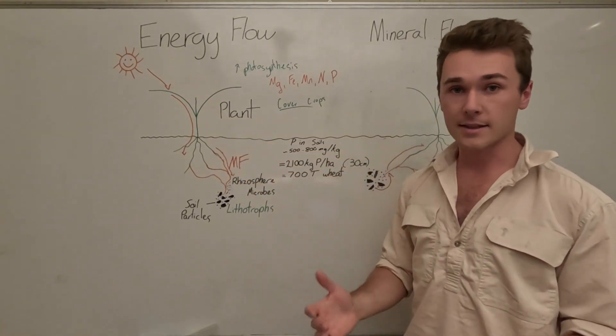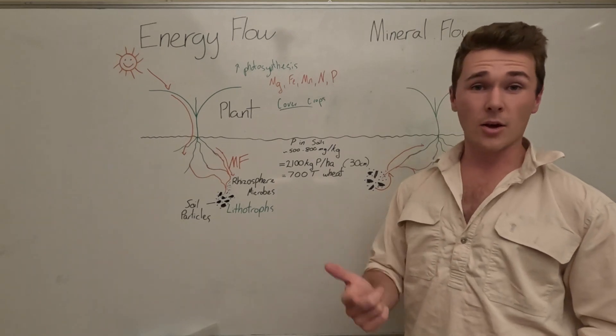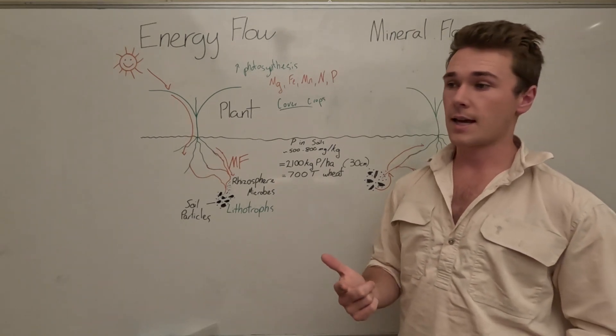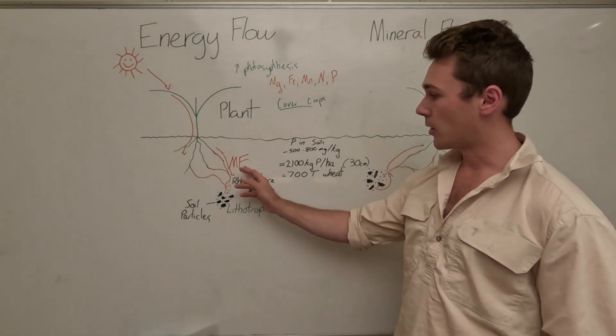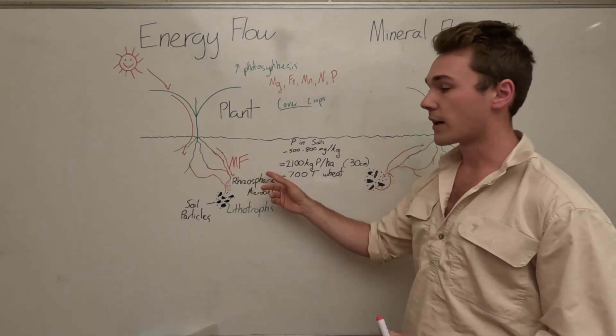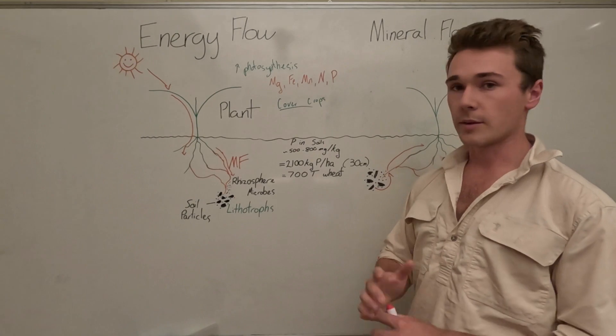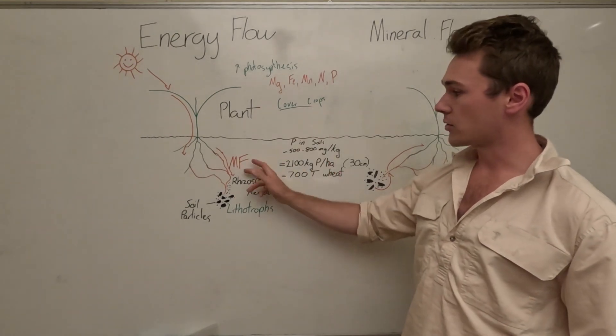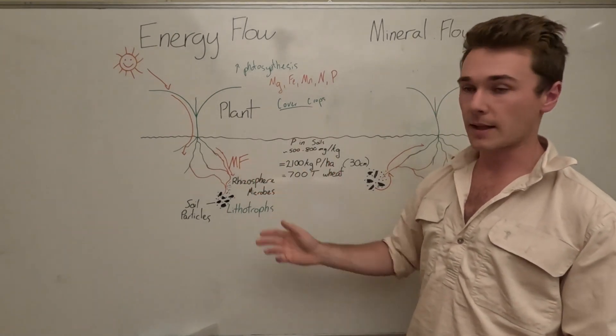Fallow is another quite destructive process for our mycorrhizal fungi. It only takes a few weeks with no plants growing that our mycorrhizal fungi start to die out. Again, cover crops are really good to make sure we conserve a mycorrhizal fungi population.